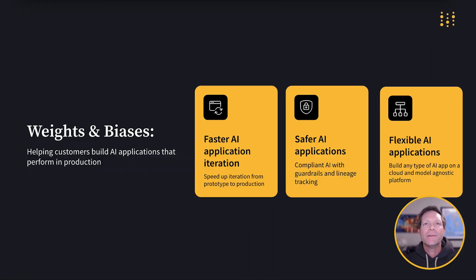Before we dive into how to use Weave, I'd like to briefly discuss why to use Weave. Adding Weave and the Weights and Biases platform to your AI development workflow means faster AI application iteration to help you build better performing applications more quickly, safer AI applications to meet compliance requirements and safeguard your users and your brand, and flexibility so you get to build your applications how you want, and deploy your applications where you want.